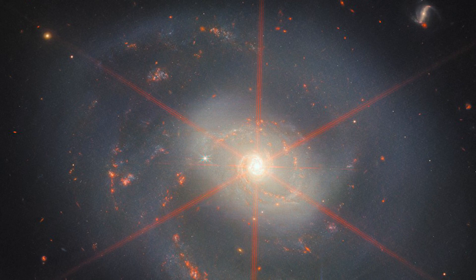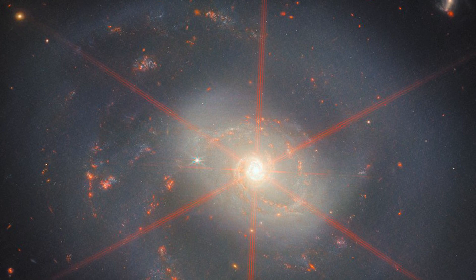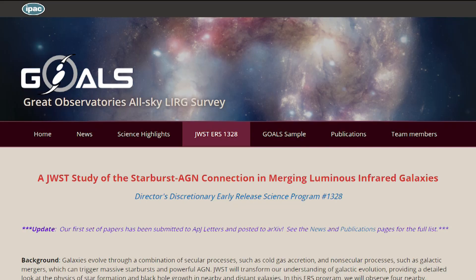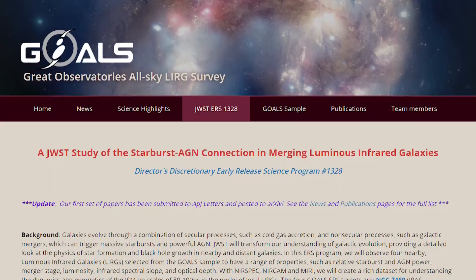The bright face-on spiral galaxy, NGC 7469, located in the constellation Pegasus and around 220 million light-years from Earth, dominates Webb's Picture of the Month for December.